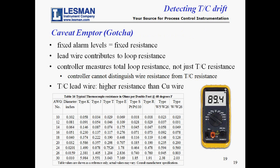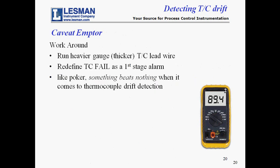There is one limitation you should be aware of: the fixed drift detection levels. Thermocouple lead wire contributes to the total loop resistance. The controller does not know whether the resistance it sees is from lead wire or from a polluted thermocouple junction, or both. Thermocouple inputs with a long run of extension wire can have resistance high enough to appear to be drift, but is really resistance due to the lead wire. There is a workaround. The alarm trip levels are fixed and not adjustable, so you can either use heavier gauge, larger diameter, lower gauge number lead wire, or use the TC FAIL alarm and redefine it as a first-stage alert rather than a second-stage alarm. When it comes to detecting thermocouple drift, it's like poker — something beats nothing.